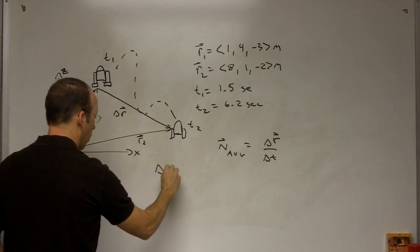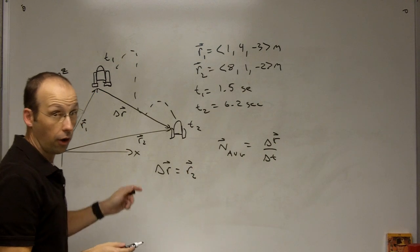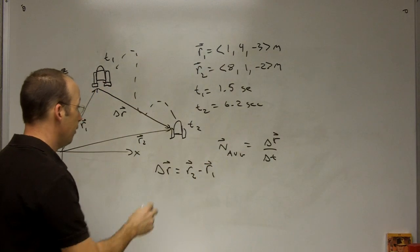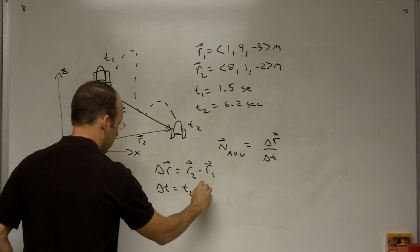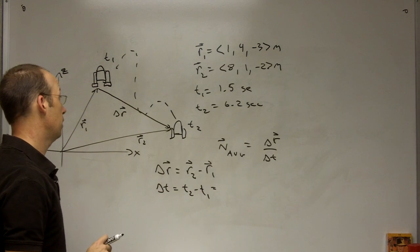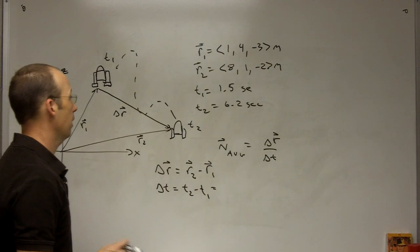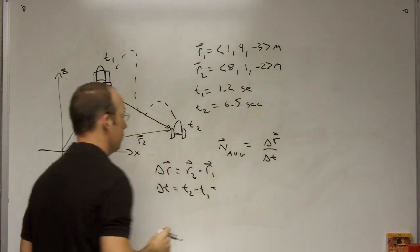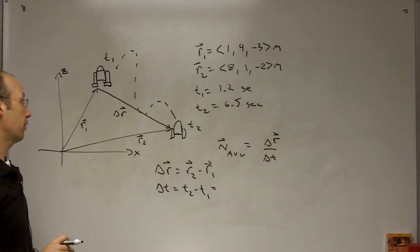So delta R is R2, not R2D2. This is lower case R, just R. R2 minus R1. And then delta T is going to be T2 minus T1. So that's going to be... let me switch these up. When you're doing something at the board, sometimes you just feel dumb. So this is going to be 5.3 seconds.